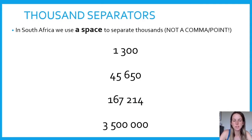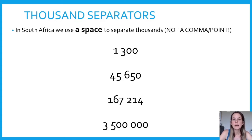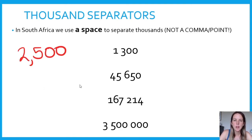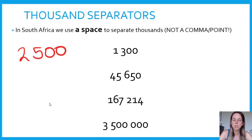Our next heading: thousand separators. In South Africa, we use a space to separate thousands — not a comma or a point. If you put a comma or a point in the thousand separator's place, your answer will be wrong. For example, if you write 2,500 with a comma as your separator, I'm going to read it as 2.5, not as 2 500. So you need to use a space, not a point, not a comma.